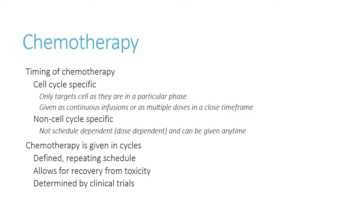Multiple cycles allow recovery time between treatments. Optimal regimens are determined through clinical trials — it's not ethical to give some cancer patients no drug whatsoever. Clinical trials compare different regimens: this drug at this dose versus that drug at that dose, varying duration and combinations. Patients 'on study' are on an actual trial to determine the best treatment for them.